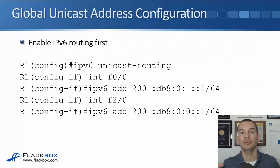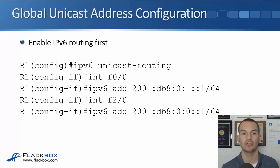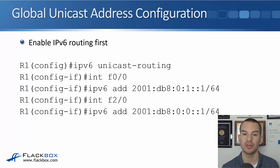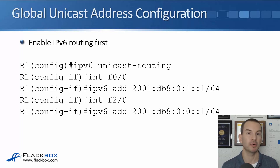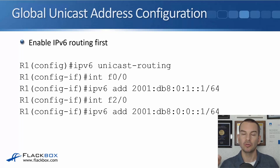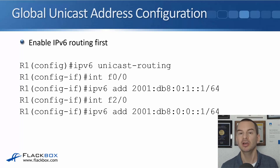To configure this, the first thing we need to do is enable IPv6 routing with the 'ipv6 unicast-routing' command. It's about time to wrap up this lecture, so we'll do the configuration in the next lecture, where I'll also show you how to do it in the lab.